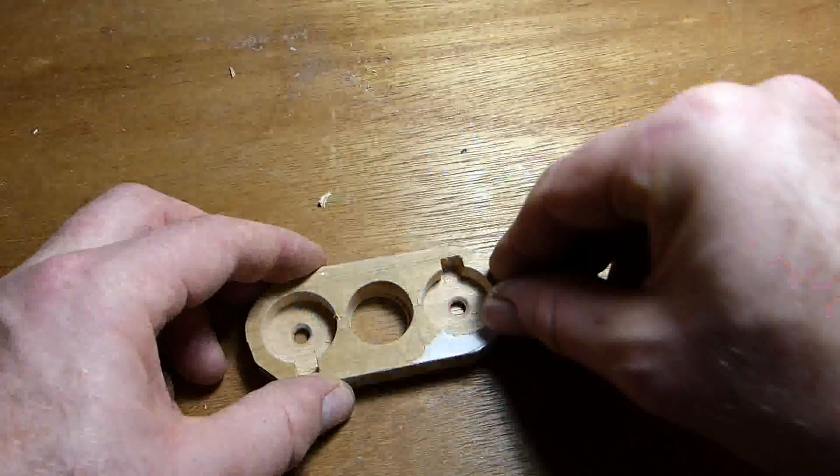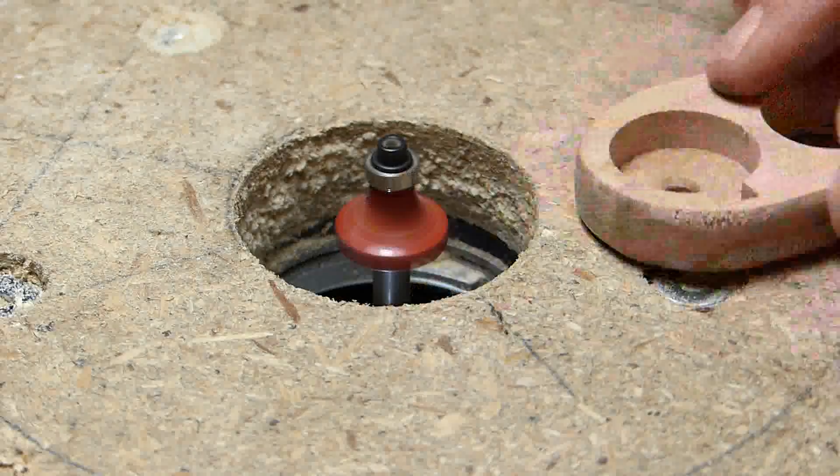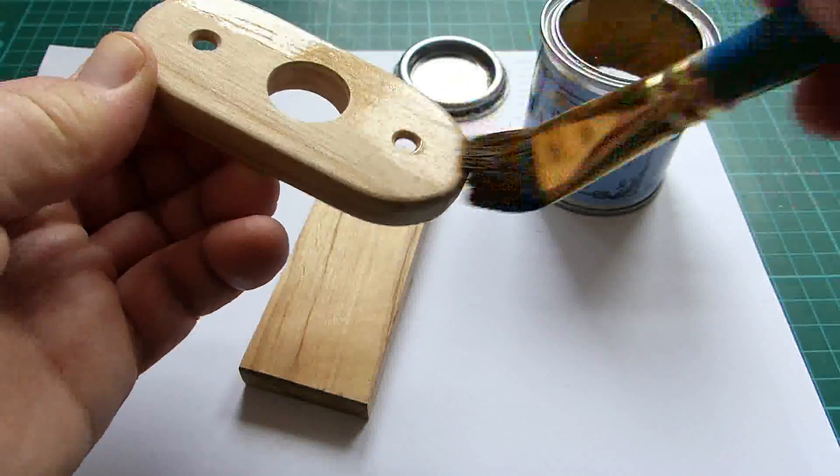I removed the paper template then rounded the edges using a round over bit installed in the router table. Sanded the wood until it was smooth and finished it off with a coat of lacquer.